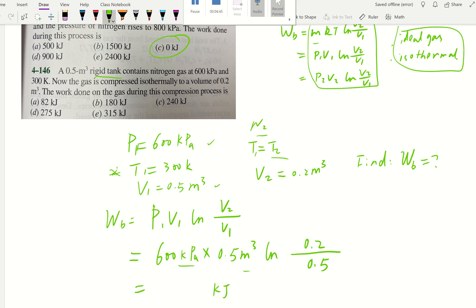And kPa times m3 is going to give us the kJ unit. And so we'll have 300 natural log of 2 over 5. Let's see what we have. So putting in the calculator, I got negative 274.89 kJ.